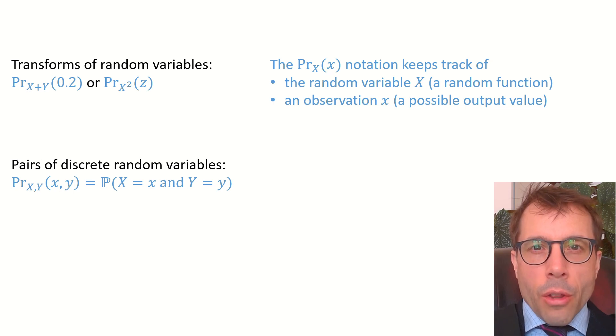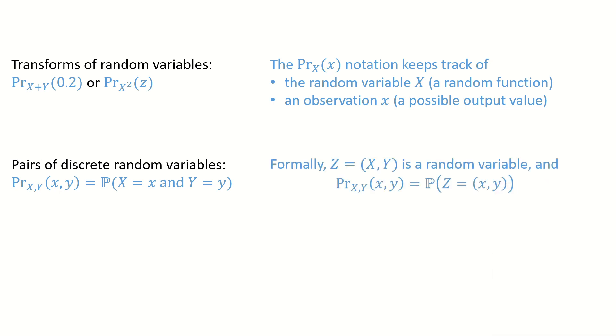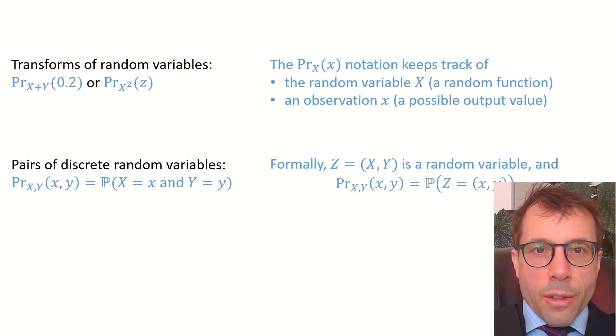This means the probability of seeing the particular outcomes little x, little y for both of them at the same time. Formally, we could just say let Z equal X comma Y be a random variable which returns a tuple. And then PR sub X comma Y is just the probability mass function for Z, the probability that the random Z takes values little x comma little y. If this formalism helps you understand the notation, if not, just ignore it.